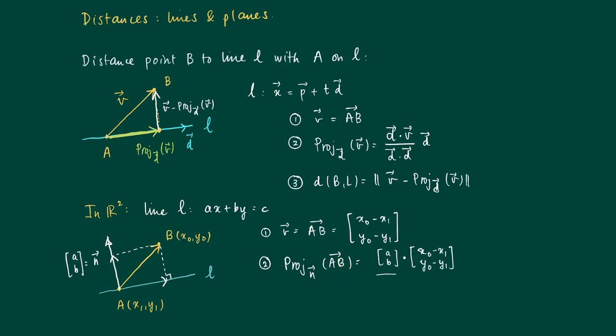The projection of AB on N is given using the simple formula: the dot product of AB with N divided by the norm of the normal vector squared times the normal vector. If we calculate the inner product here, we get A times X zero plus B times Y zero minus A times X one minus B times Y one.